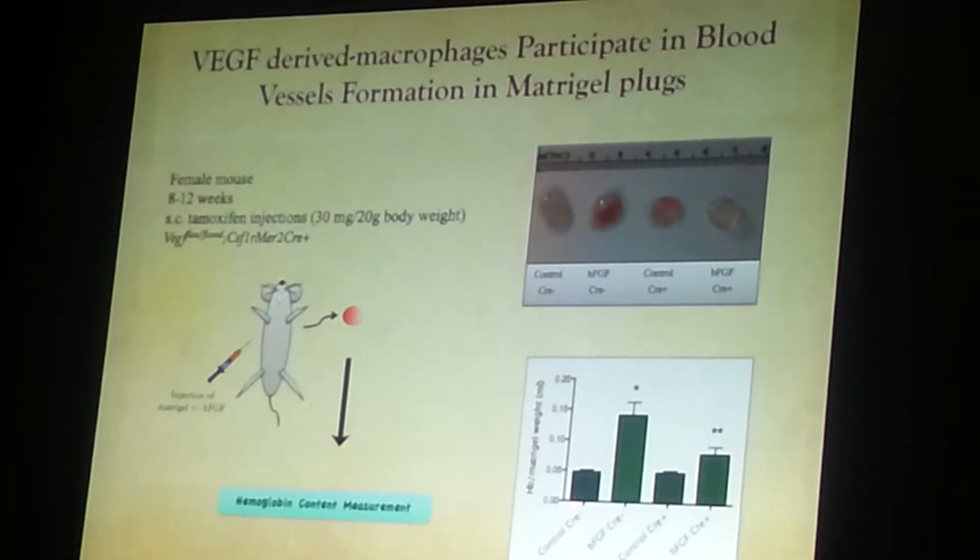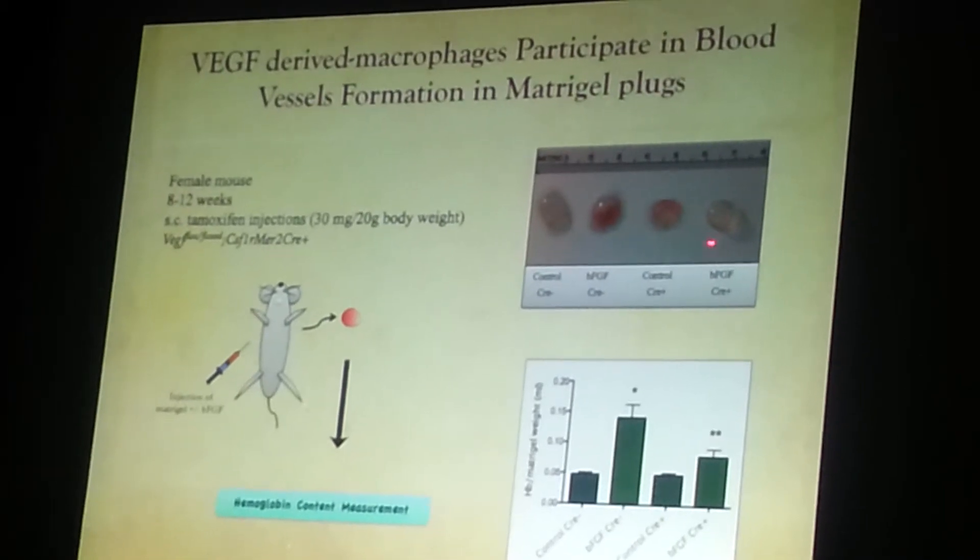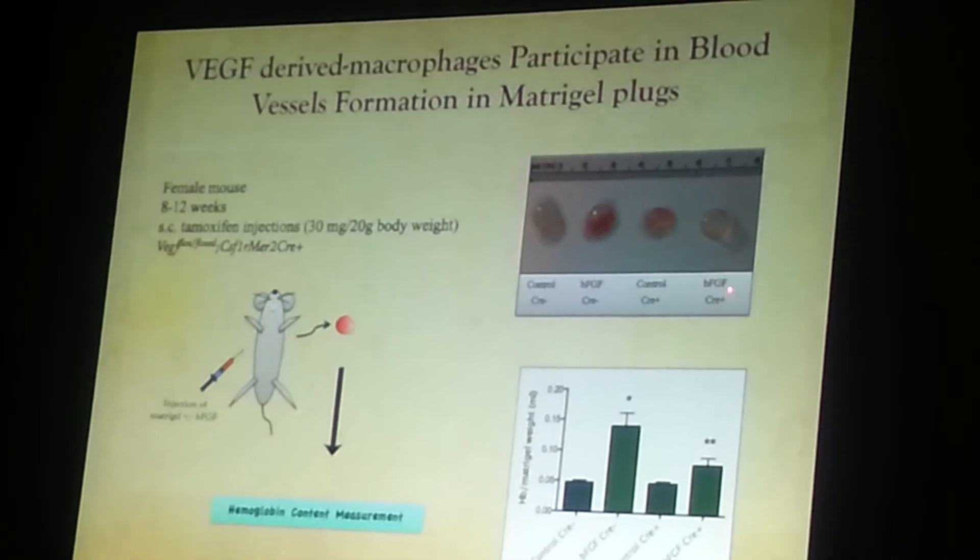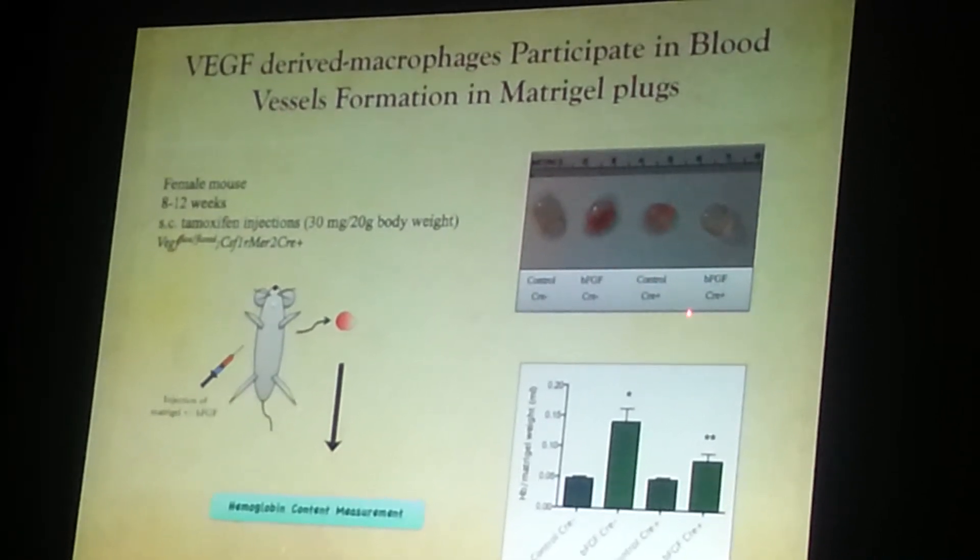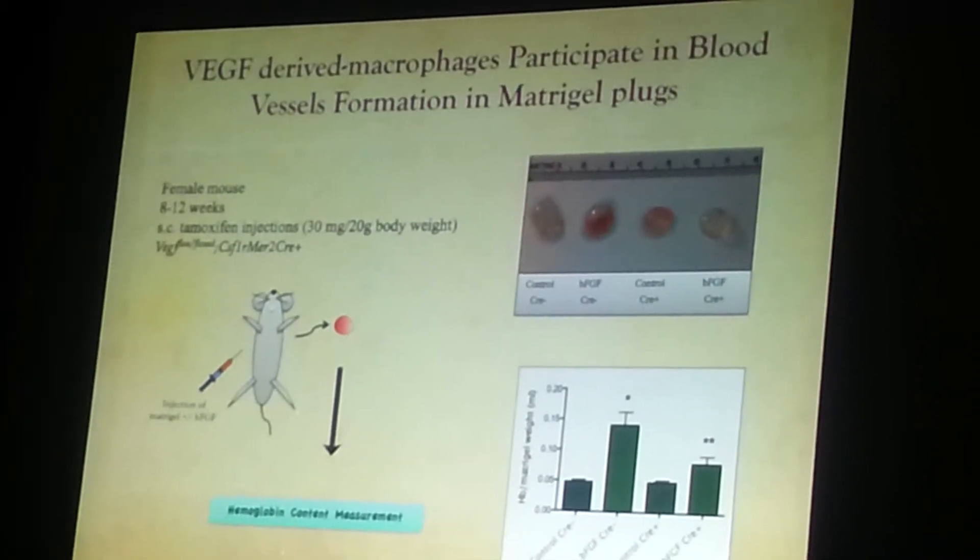This is significant in comparison with the control. However, in the absence of VEGF in macrophages, even though they are in the presence of basic FGF, they cannot form blood vessels in the plug, and this is correlated with the hemoglobin content in the plug.